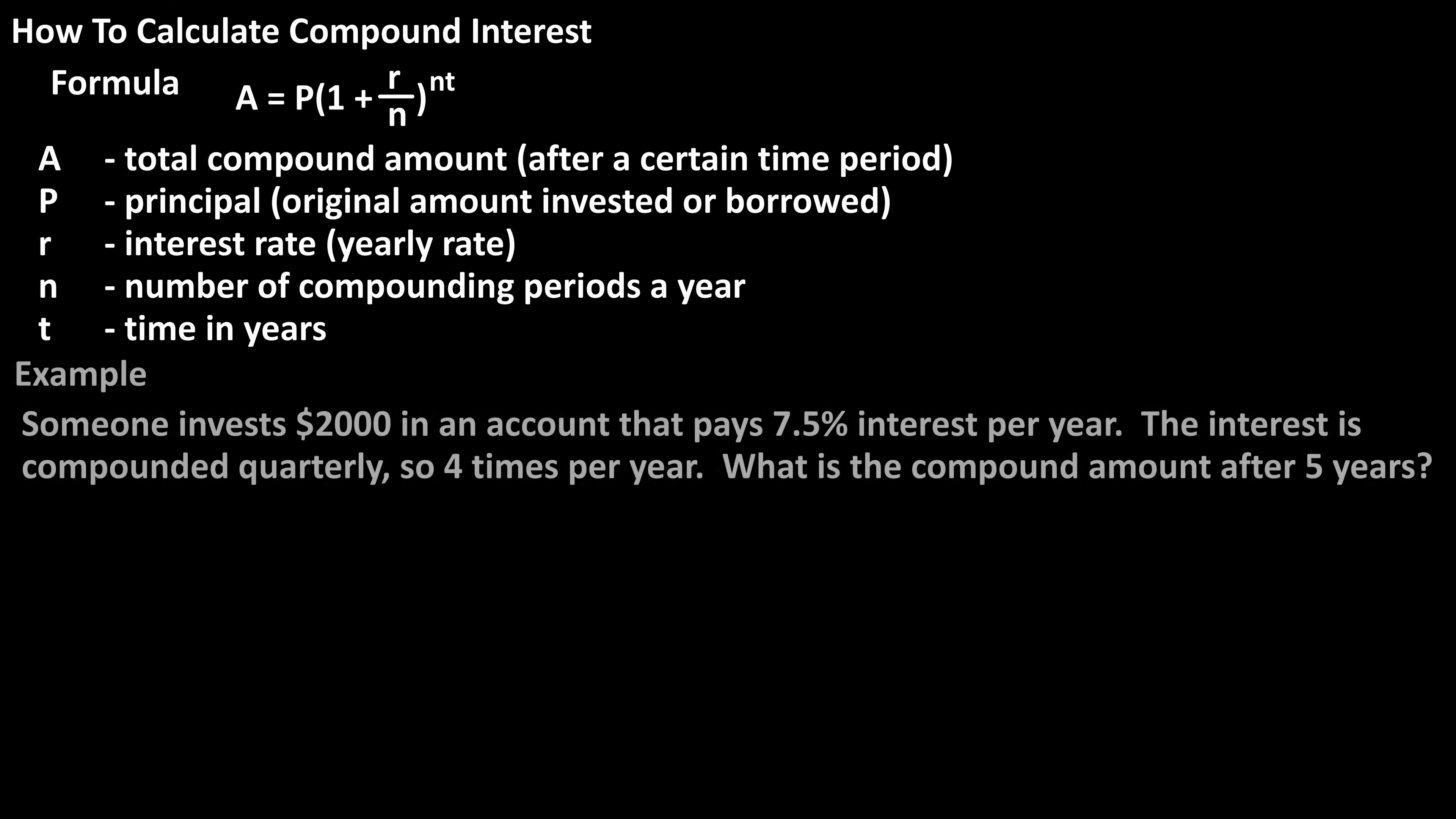As an example, let's say that someone invests $2,000 in an account that pays 7.5% interest per year. The interest is compounded quarterly, so four times per year. What is the compound amount after five years?